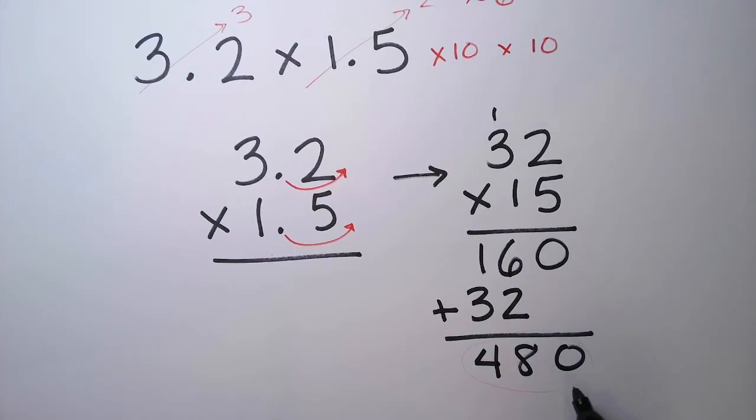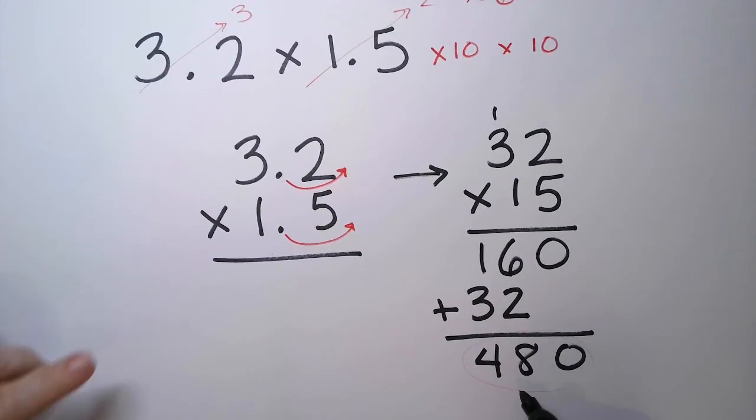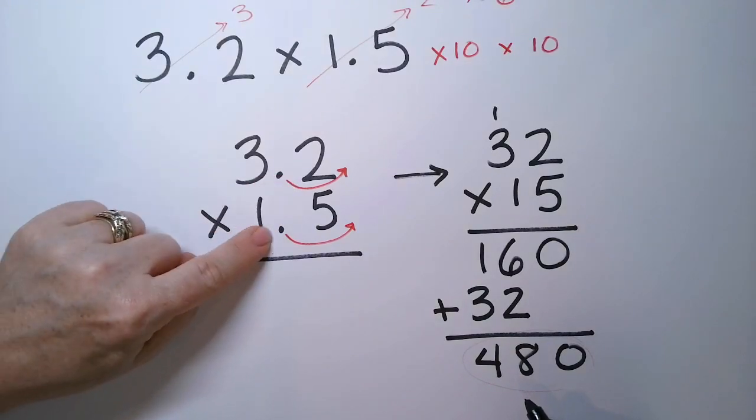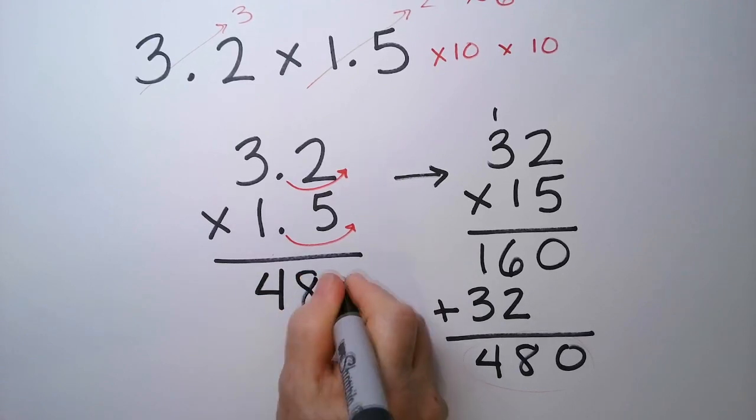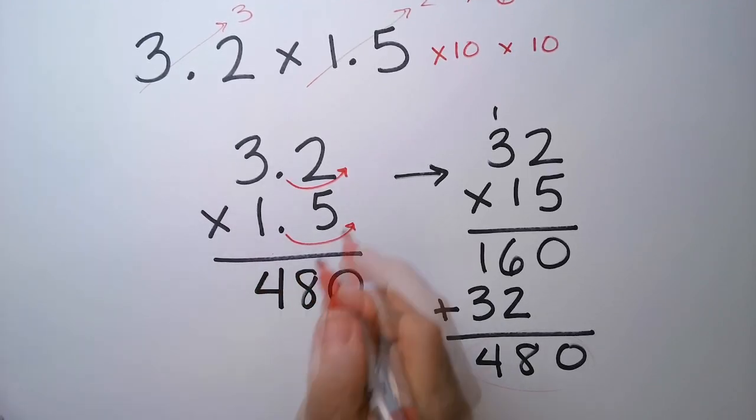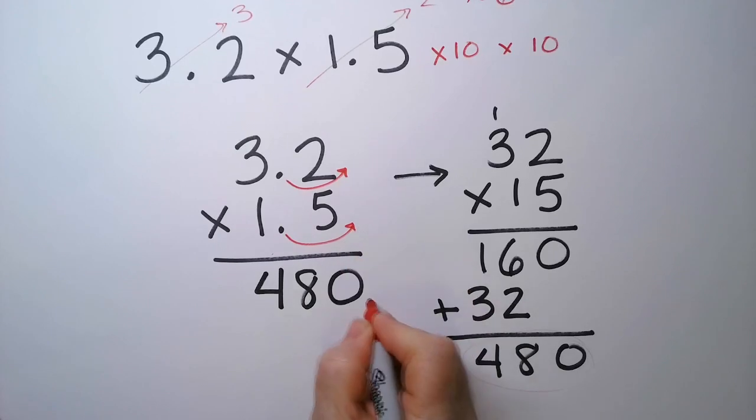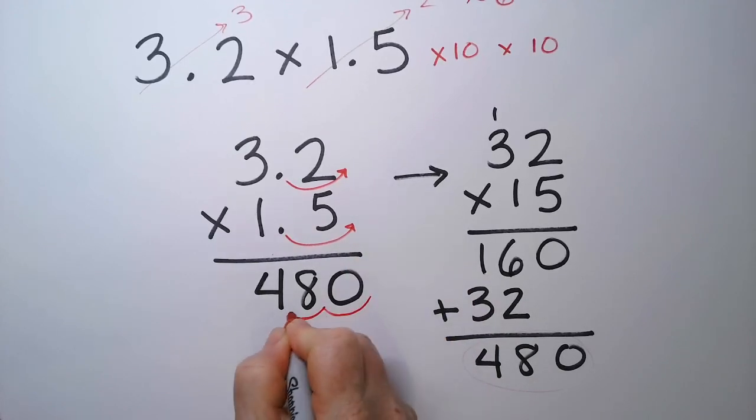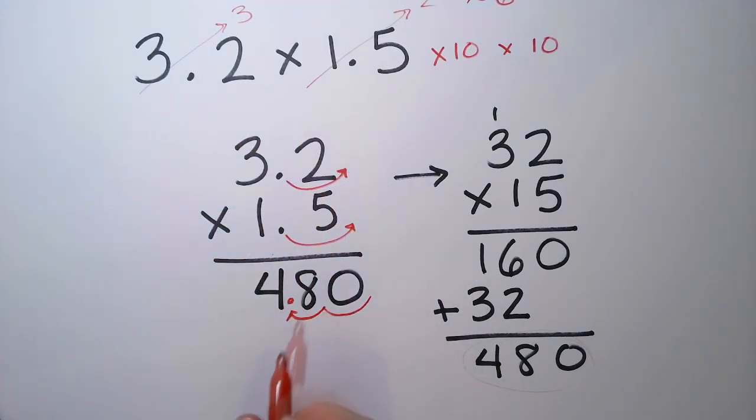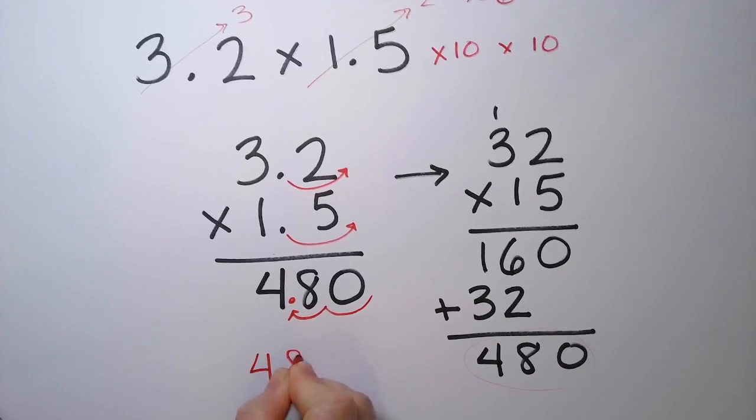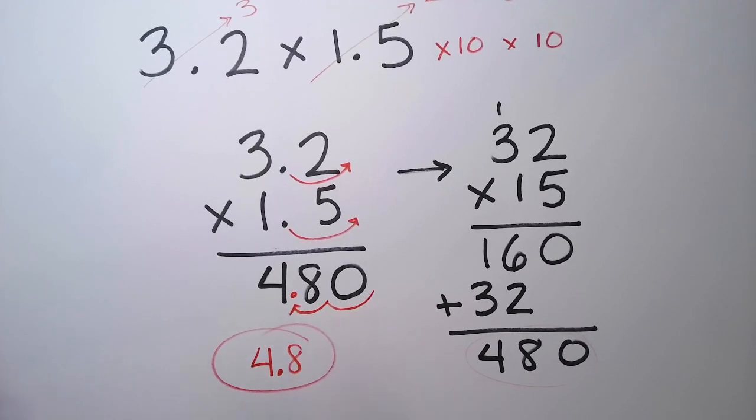So 32 times 15 is 480. What we're going to do now is adjust this number. So it's 3.2 times 1.5. So I'm going to write 480. And this was 1 hop, 2 hops. So I'm just going to go in 2 hops, and the decimal point goes there. So the answer to 3.2 times 1.5 is 4.8. And that's my final answer.